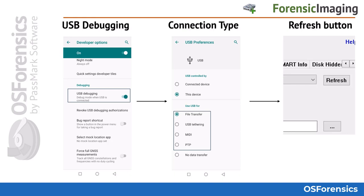Keep in mind that the connection setting can differ from handset to handset — this is sometimes a trial-and-error process, selecting different connection or transfer type options until you find the correct one for that device. After making a selection on the handset, click the Refresh button in OS Forensics. If a specific setting doesn't work, reconnect the device, choose a different connection type, and click Refresh again. Once the device is recognized by OS Forensics, you can continue to the next step.